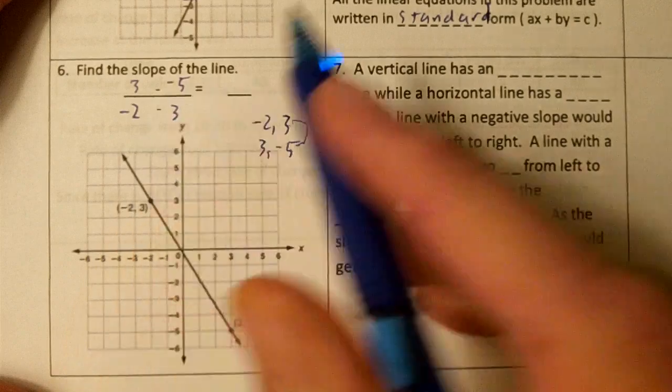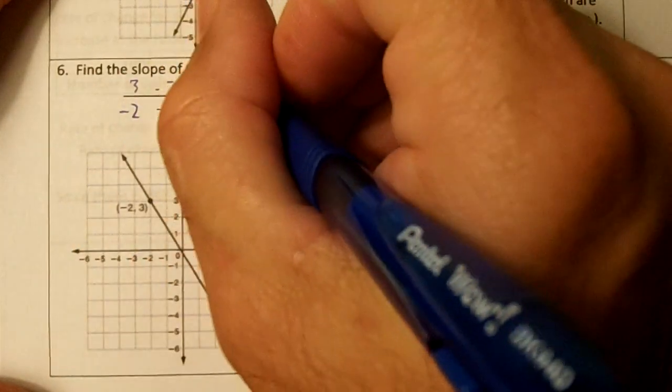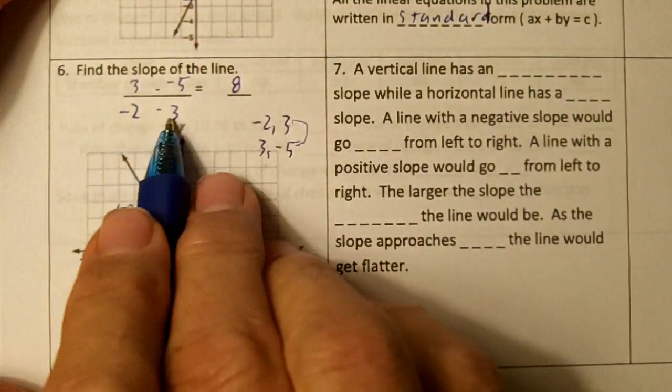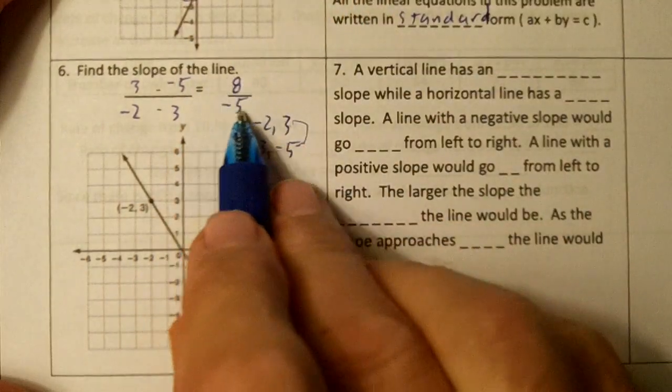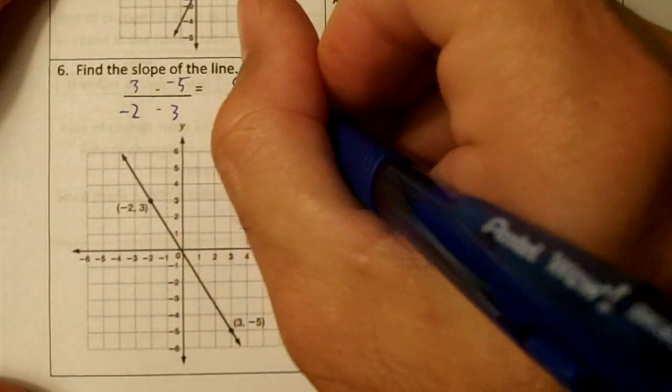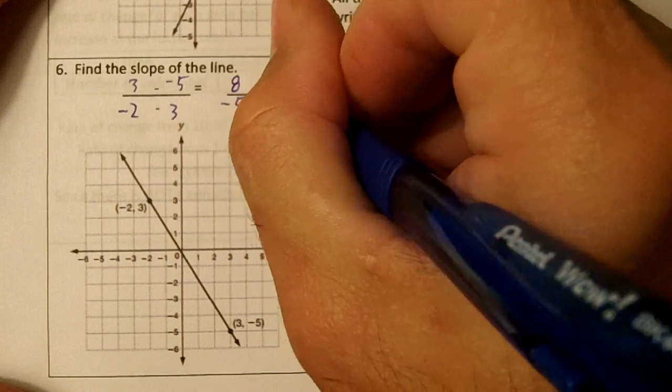Three minus a negative five would be three plus five which is eight. Negative two minus three would be negative five. There's one negative in this fraction so the answer will be negative eight over five.